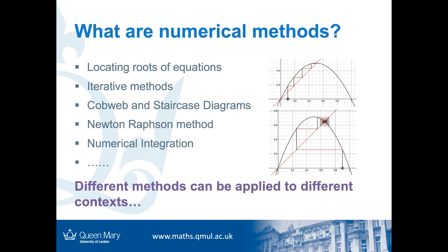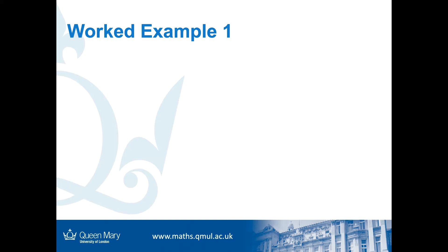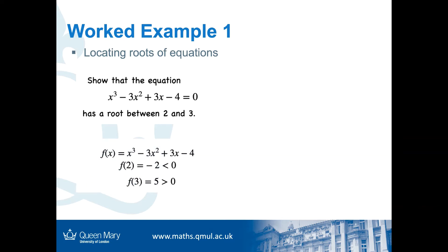Let's see this example: locating roots of equations. So we have this equation x³ - 3x² + 3x - 4 = 0. Let's show that this equation has a root between 2 and 3. So how do we show it? We first let f(x) = x³ - 3x² + 3x - 4.